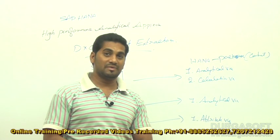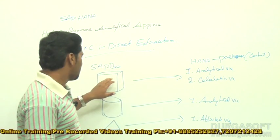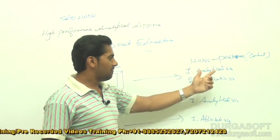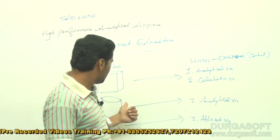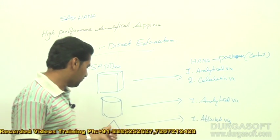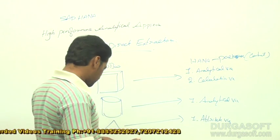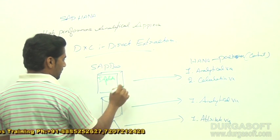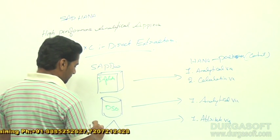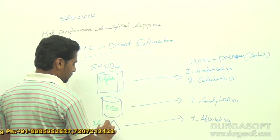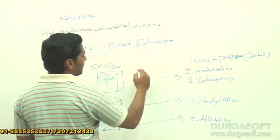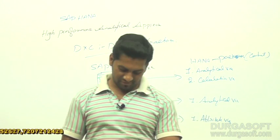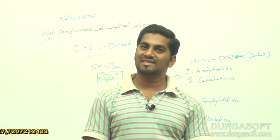In SAP BW, an info cube is a combination of multiple tables that shows summarized data, while a DSO stores detail-level data and a combination of multiple tables. An info object stores master data. When you bring an info cube into the HANA environment, it becomes an analytical and calculation view; DSO becomes analytical view; info object becomes attribute view. DXC is used to load this BW data into HANA.